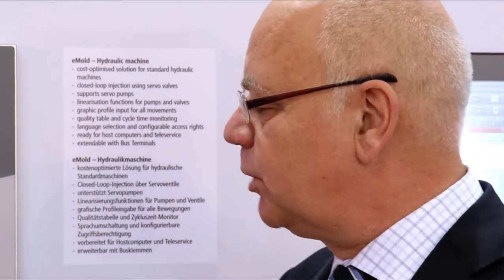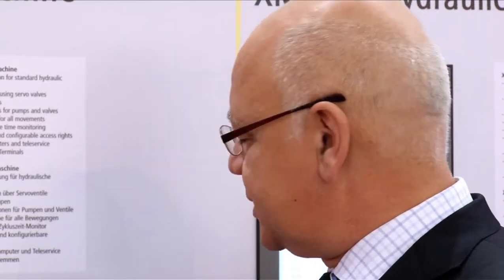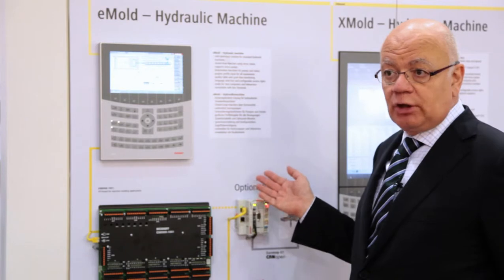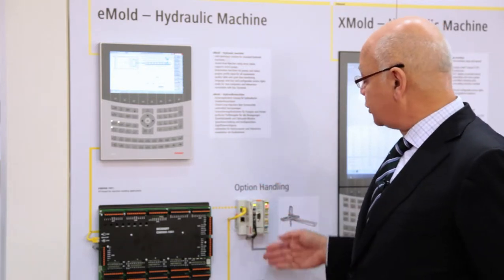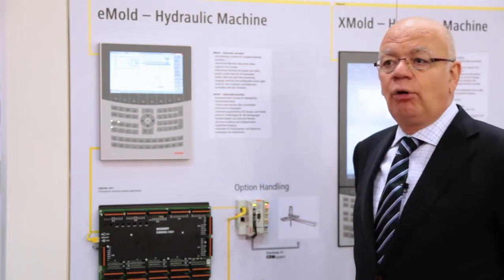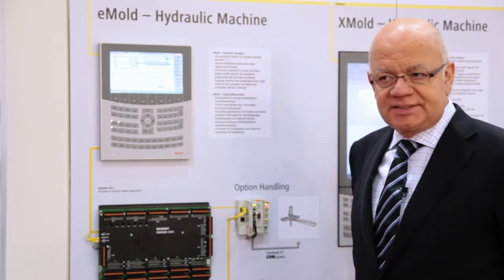As an option, it is possible to use our rack of standard I/O — for instance, to connect a handling system. You can connect a handling system via a separate processor, an integrated processor, or via CAN open, which means ORMAP 67.